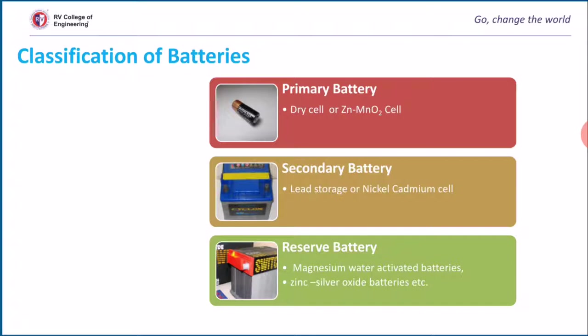Reserve batteries: in this type of battery, one of the key components is separated from the rest of the battery prior to activation. Usually the electrolyte is the component that is isolated. When one key component is separated, chemical reaction between cell components — that is, self-discharge — is prevented, and the battery is capable of long-term storage. That is why reserve batteries have more durability and less self-discharge.